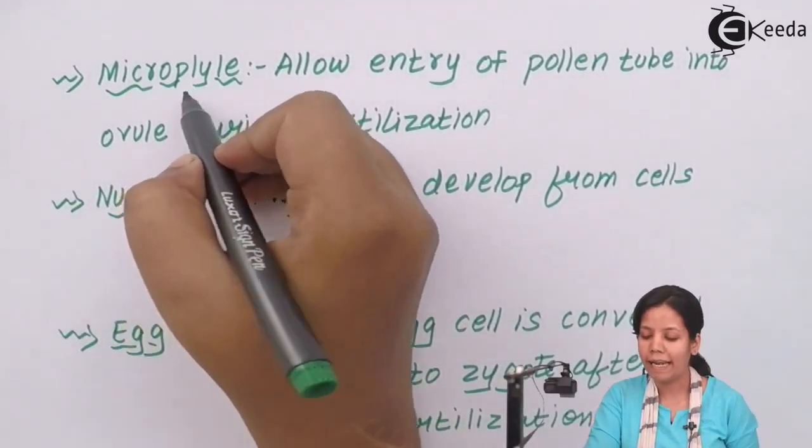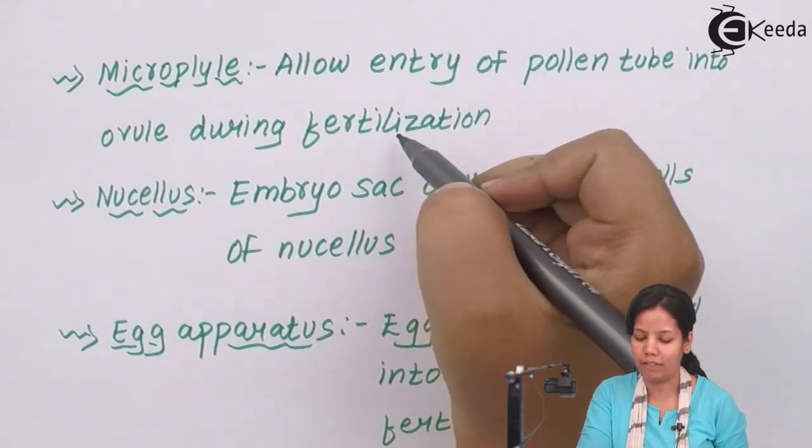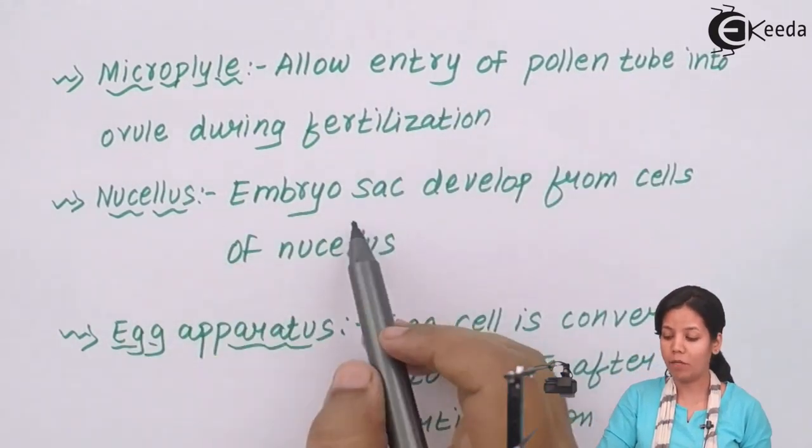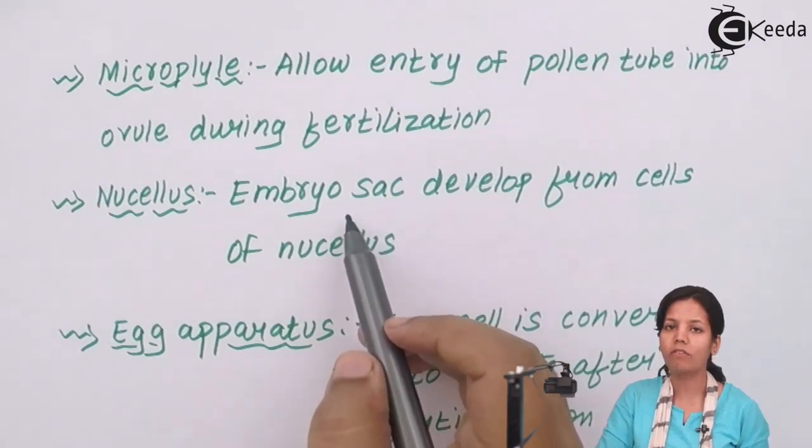Micropyle, the micropylar end allows the entry of pollen tube, the tube that is formed during the process of double fertilization. Nucellus basically forms embryo sac that provides nourishment to the growing embryo after the process of fertilization.